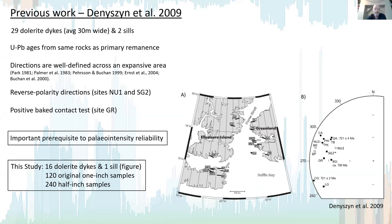This is based on previous work by Denison et al. in 2009 who sampled almost 30 dolerite dikes and two sills, obtaining uranium-lead ages from the same rocks from which they acquired primary remanence. The directions of the Franklin event are well defined across an expansive area.